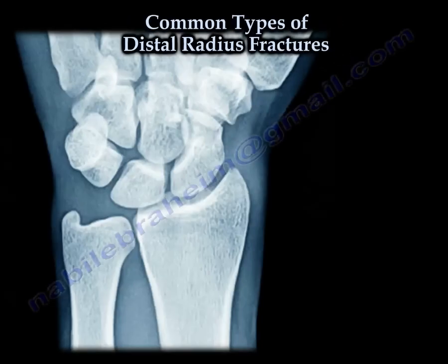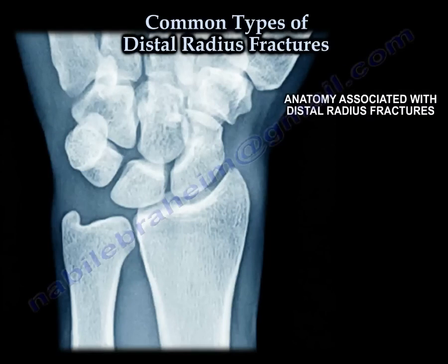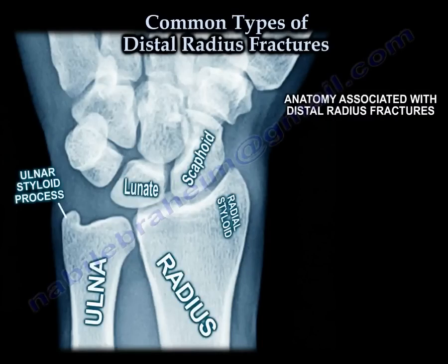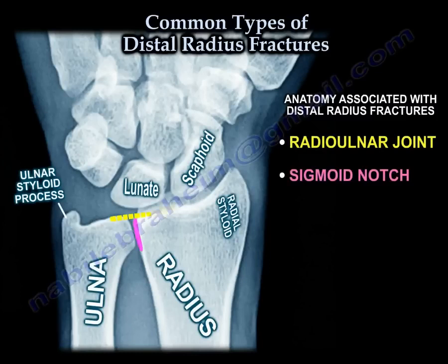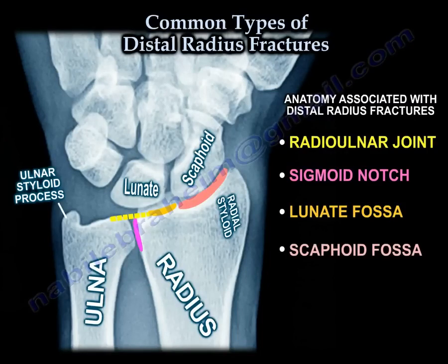Common types of distal radius fracture. We need to know a few things about the anatomy and a few things about the x-ray and what we look for. It's not just the fracture — we need to look at the radioulnar joint, the sigmoid notch, the lunate fossa, the scaphoid fossa, and the ridge in between the two fossae. We also need to look at the carpal bones, especially the lunate and the scaphoid.